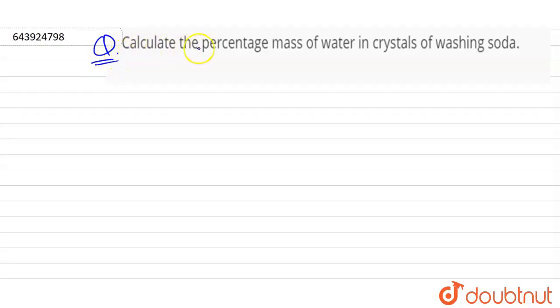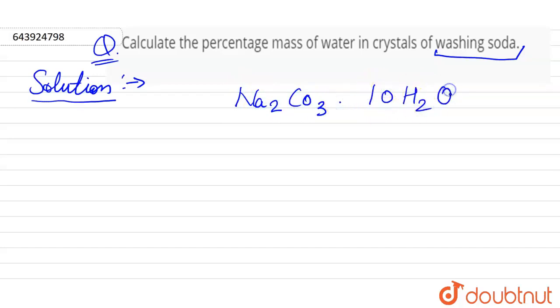Question: Calculate the percentage mass of water in crystals of washing soda. For washing soda, formula is Na2CO3·10H2O.